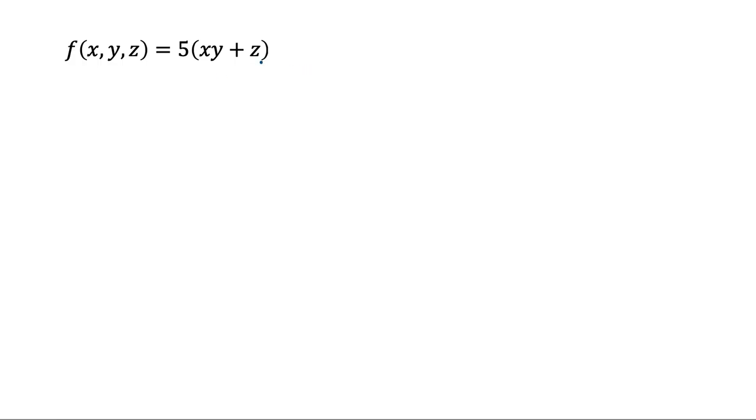You can think of it as: first, you calculate the product of x and y. Let's call it variable u. Then you add the value of u to z to get another variable v. Finally, you multiply v by 5 to get the final function f.